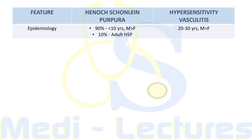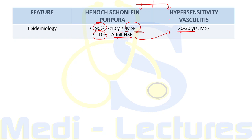Now for ANCA-negative small vessel vasculitis. We will compare Henoch-Schönlein Purpura (HSP) and Hypersensitivity Vasculitis side by side. HSP is typically a disease of children — in more than 90 percent of cases seen in less than 10 years of age in the male sex, though 10 percent have adult onset (adult HSP) at 20 to 30 years. Hypersensitivity vasculitis is seen in 20 to 30 years, more common in males.